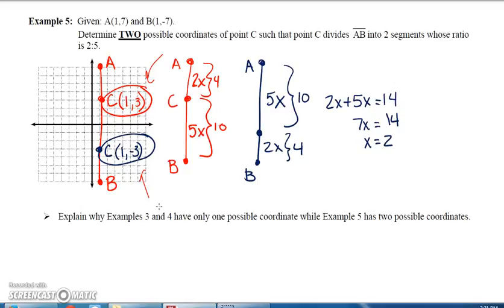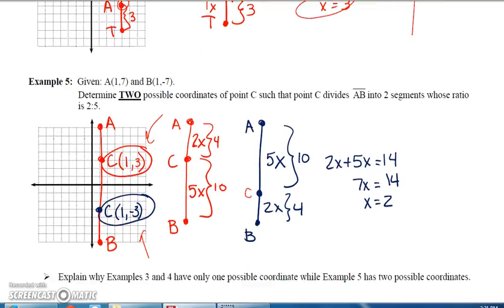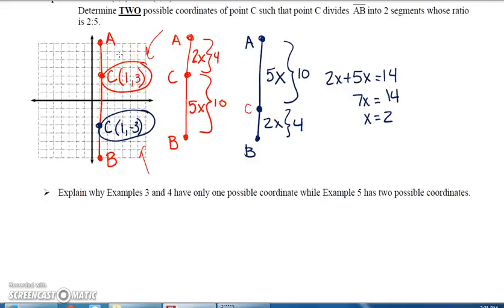Now, why do examples 3 and 4 have only one possible coordinate, while 5 has two? Because in 3 and 4, they told you which endpoint the point was closer to. In example 5, they said here's A, here's B, we're going to put C on the line segment AB somewhere, but they didn't tell you if C was closer to A or closer to B. So you had to do two different calculations: one as if C is closer to A, and one as if C is closer to B. You count it up from here to here, AB is 14. So it's going to be 2x plus 5x. The ratio is 2 to 5. 2x plus 5x is going to equal 14, so X equals 2.